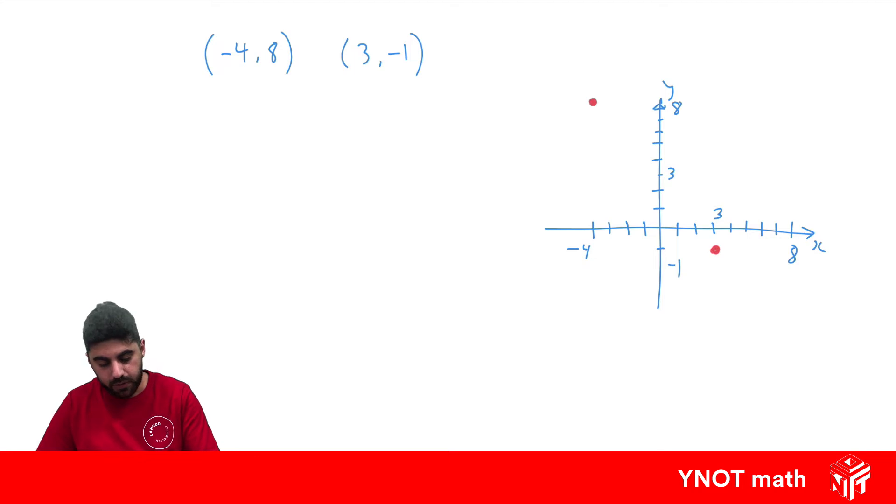So what we want to do is find the gradient of this line that joins those two points. Straight away, just by looking at that, we know we should get a negative answer because that line is sloping that way. So let's see what happens.